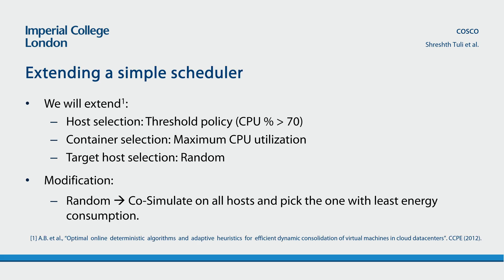We will extend a very simple scheduler from a CCPE 2012 paper where the host is selected using a threshold policy, where hosts with CPU utilization greater than 70% are selected. From these selected hosts, we select those containers that have the maximum CPU utilization percentage, and for these selected containers the target host selection is random.